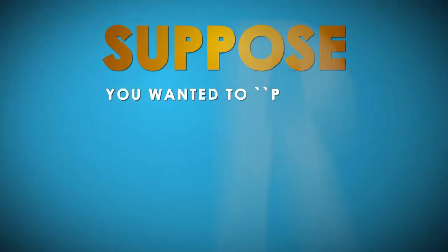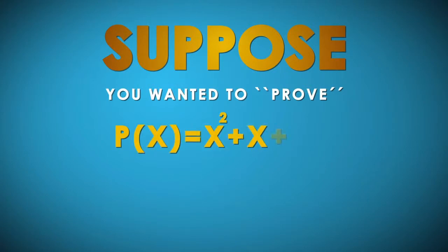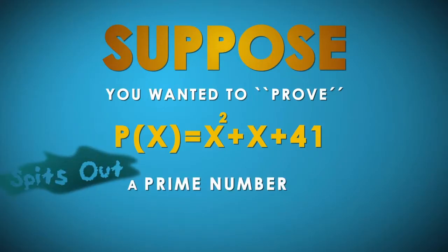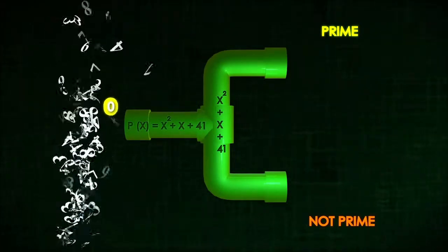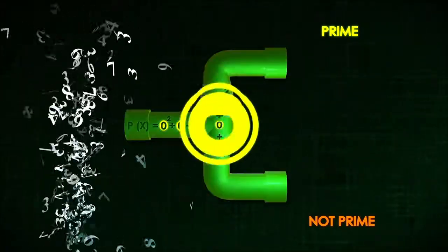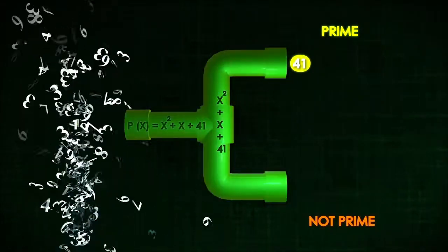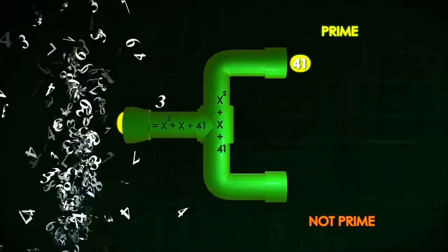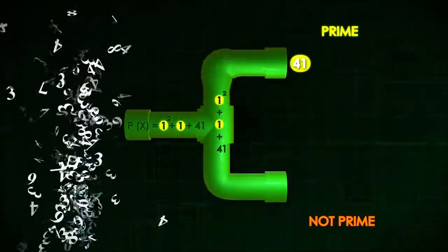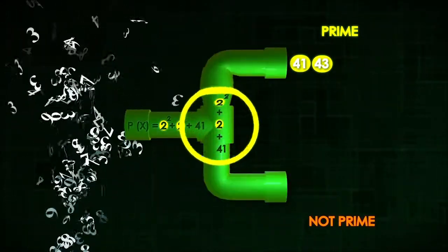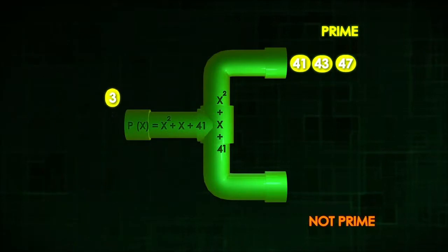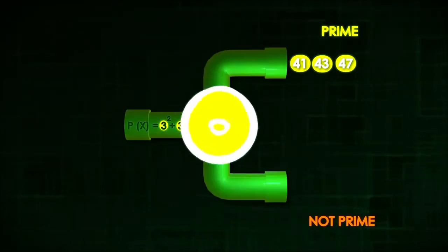For example, suppose you wanted to prove that the polynomial x squared plus x plus 41 spits out a prime number for any integer x. The completely boneheaded thing to do would be to plug in the integers 0, 1, 2, 3, and then conclude it is true.